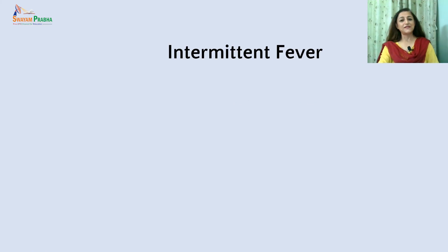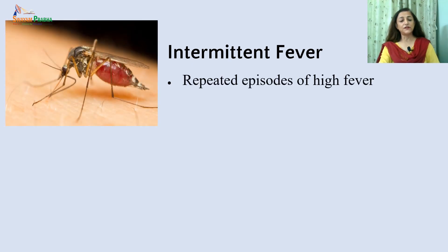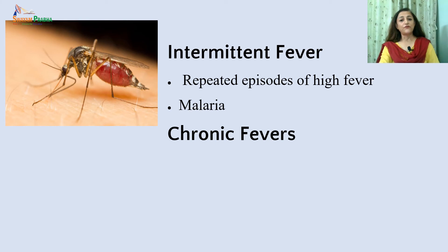The second type is intermittent fever. It is a pattern of fever in which there is an interval when temperature is elevated for several hours, followed by an interval when temperature returns to normal. This type of fever usually occurs during the course of an infectious disease such as malaria.